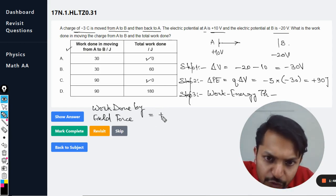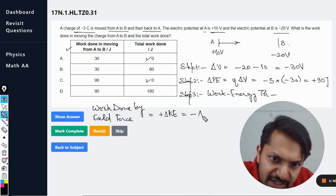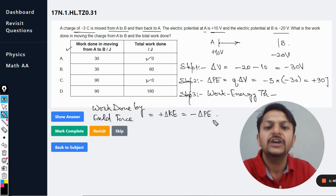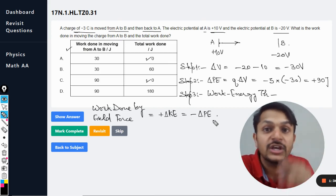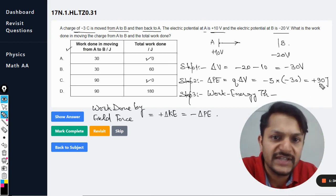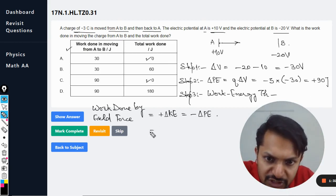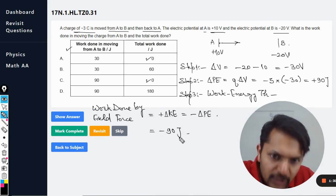Work done by the field force is positive change in the kinetic energy and the negative change in the potential energy. So either of these two we would be using. In this case we are going to use the total change in potential energy which is 90, so we are going to substitute it here.